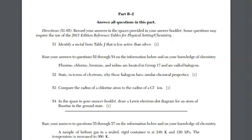Question 51 says identify a metal from table J that is less active than silver. Here we are at table J. The way this table runs for the metals, which silver is a metal, is we are going to go from most active and go down to least active.